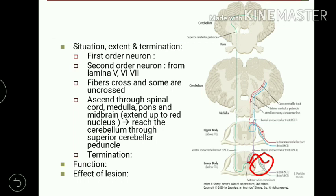The majority of second order neuron fibers cross and ascend up through the spinal cord, medulla oblongata, pons, and midbrain. They extend up to the level of the red nucleus and reach the cerebellum through the superior cerebellar peduncle. There are three cerebellar peduncles: superior connects cerebellum to midbrain, middle connects to pons, and inferior connects to medulla. Again it crosses and ends in the cerebellar cortex.